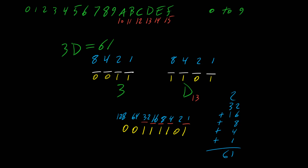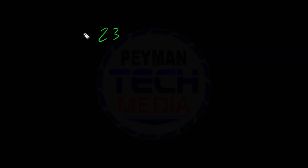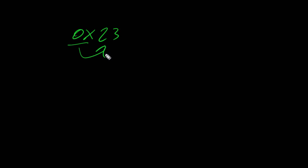So what we did here was use binary as a bridge: first converting hexadecimal to binary, then going to decimal. We can see 3D as our hex number. We don't need the 0x prefix here because 3D doesn't exist in decimal. But for something like 23, we wouldn't know if it's hexadecimal or decimal without the prefix.